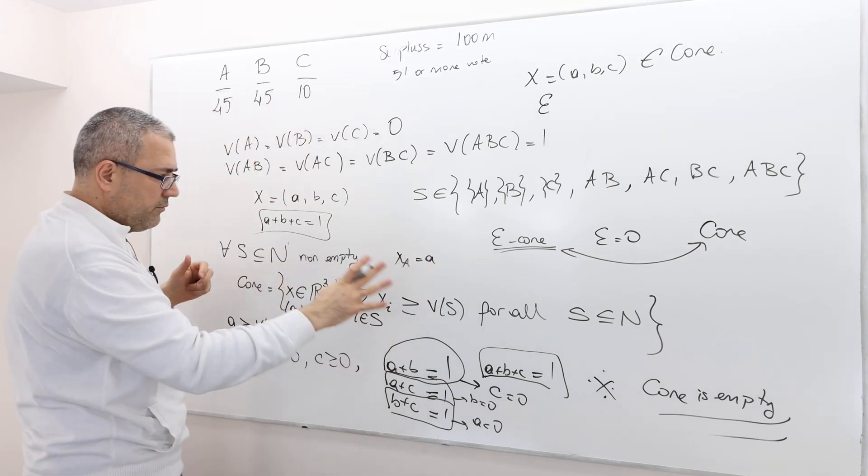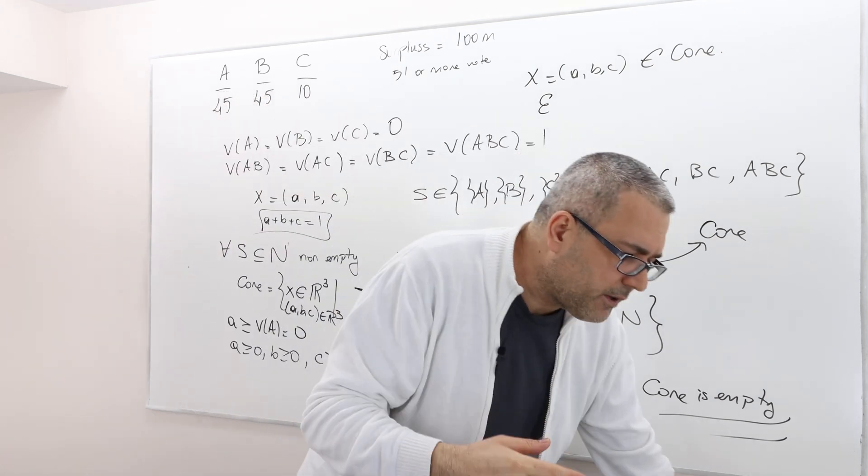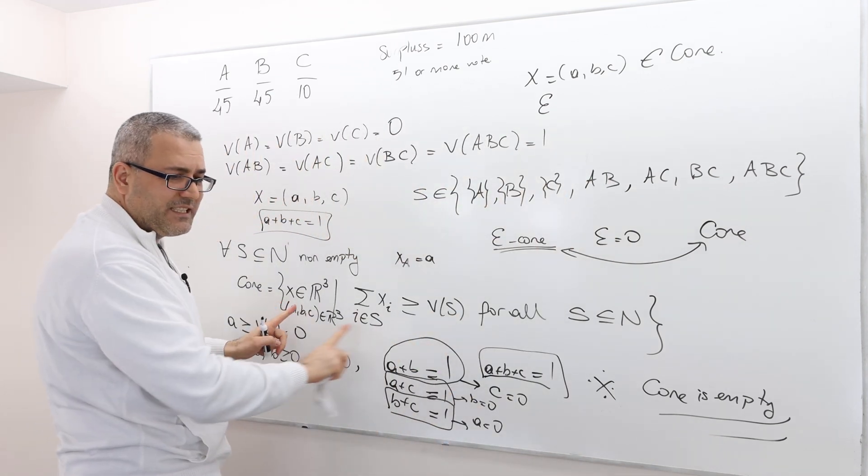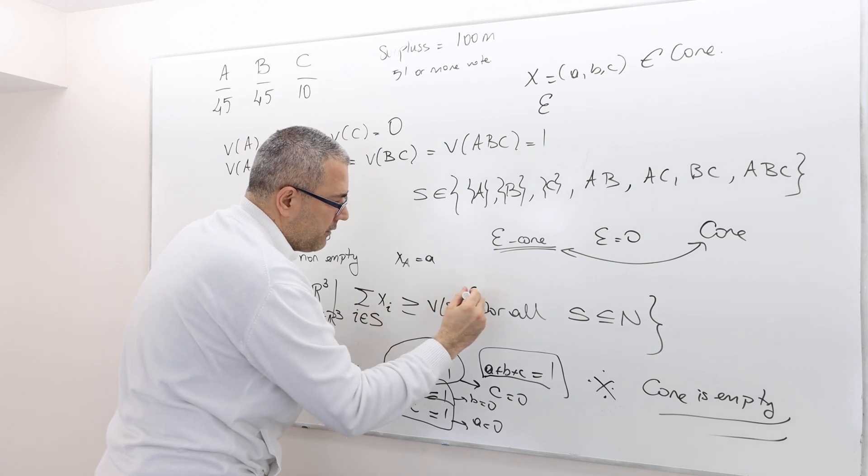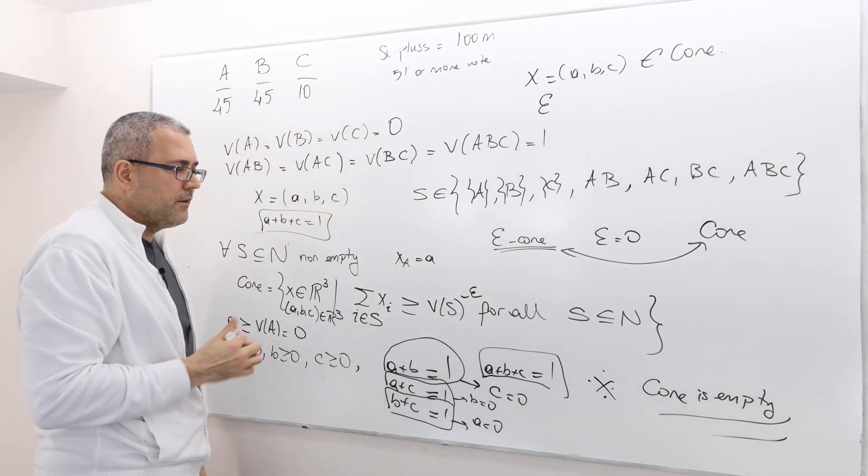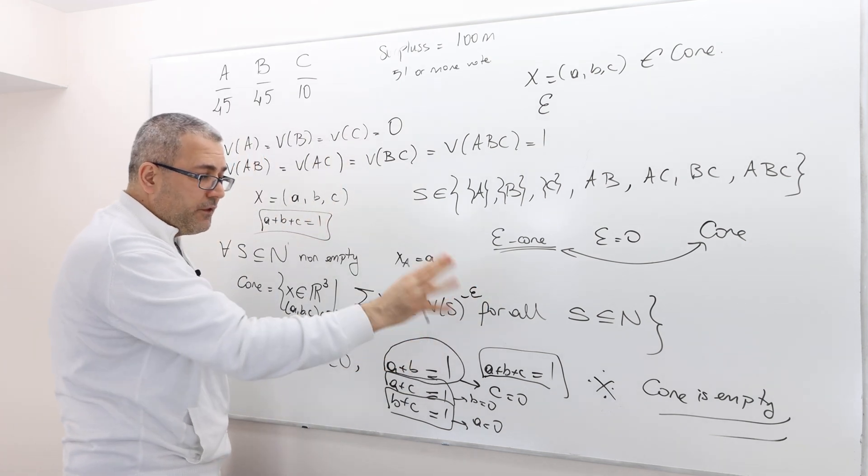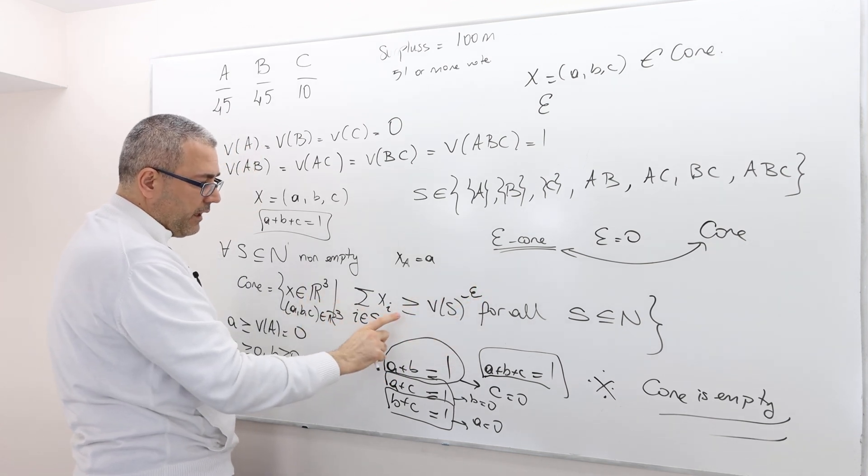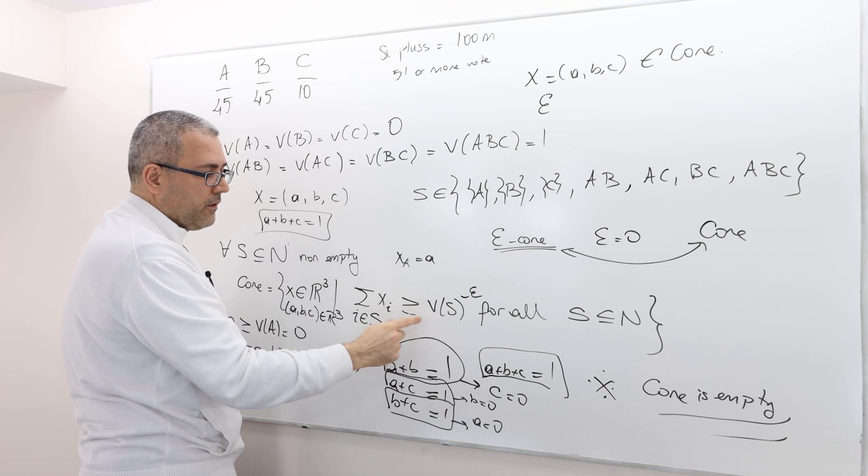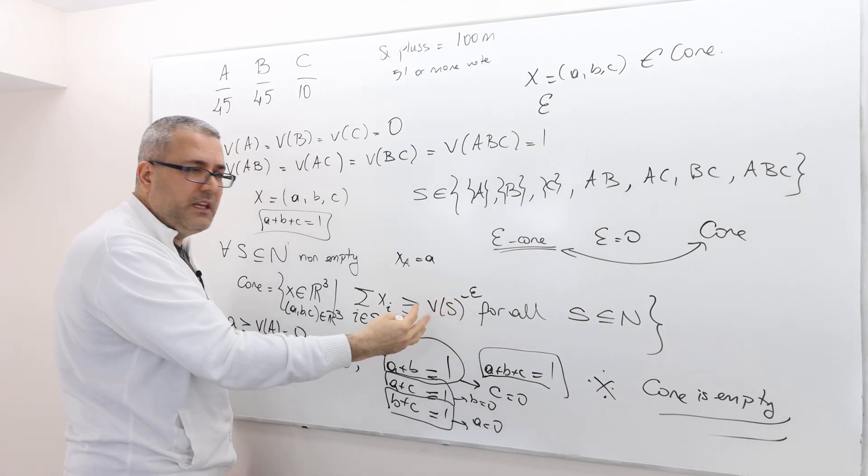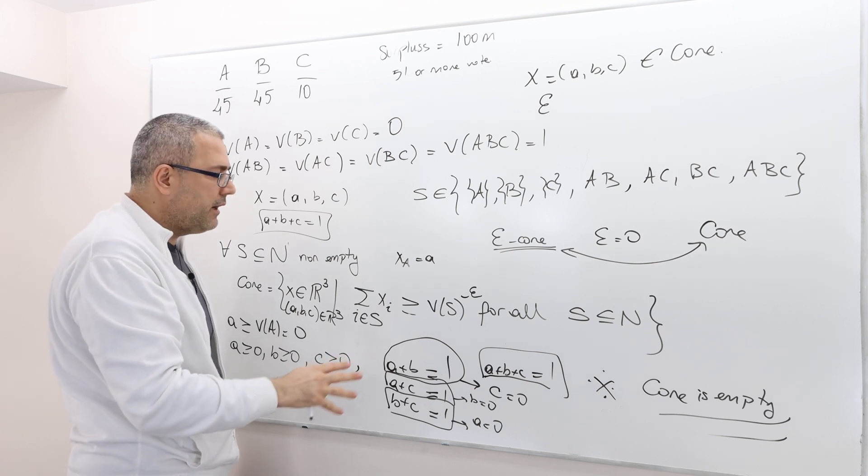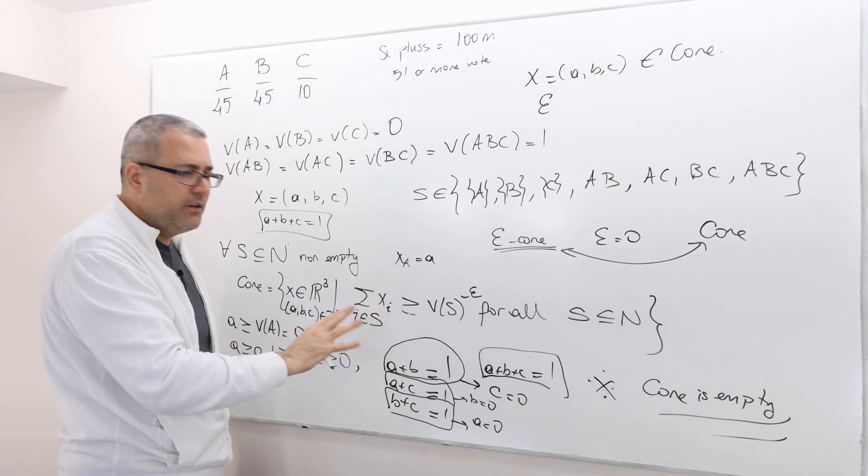So if you remember the epsilon core definition, it is kind of exactly this thing minus epsilon here. So it means, basically, if the core is empty, I cannot find something which satisfies this. So V of S is going to be greater than this summation for some coalition, whatever the xi vector you consider.